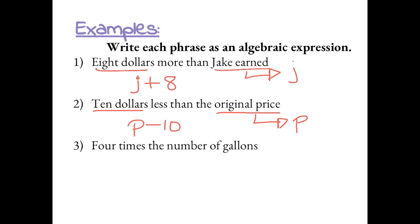Number 3, 4 times the number of gallons. The number of gallons is unknown. We don't know how many gallons. So I'm going to define the variable and label it G. And we want to write an expression that is 4 times the number of gallons.